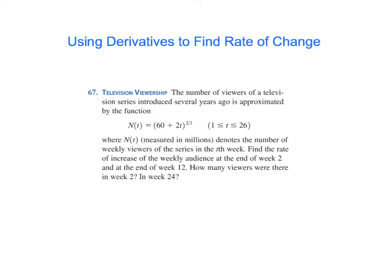The number of viewers of a television series introduced several years ago is approximated by the function N(t) = (60 + 2t)^(2/3). The domain for this function is 1 ≤ t ≤ 26, where N(t) is measured in millions of viewers. N(t) denotes the number of weekly viewers of the series in the tth week.